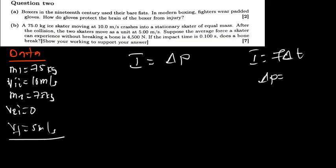And the change in momentum is mass times the change in velocity. So the change in velocity is V final minus V initial.